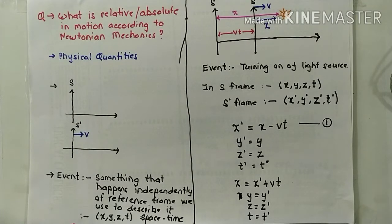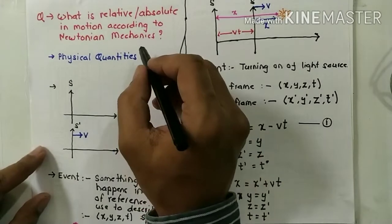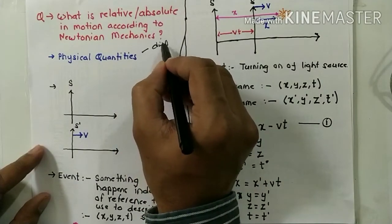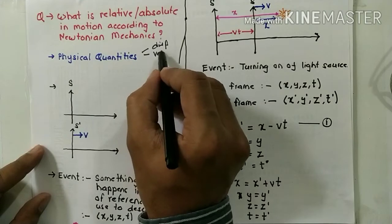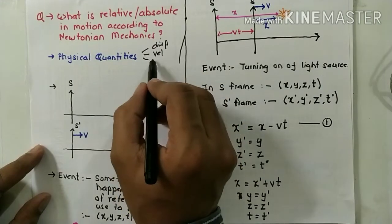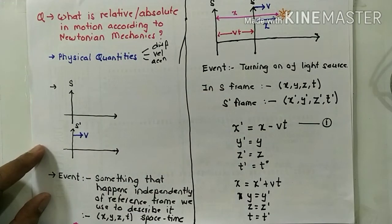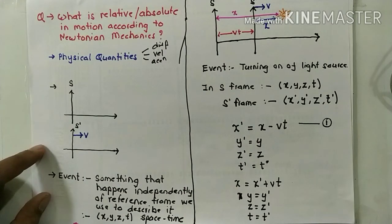What are the physical quantities that are involved in Newton's mechanics? We know these are distance, displacement, velocity, speed, and acceleration. These are the quantities that we use to describe the motion of an object. Now, which of these are relative and which of these are absolute — that is the whole idea of relativity.